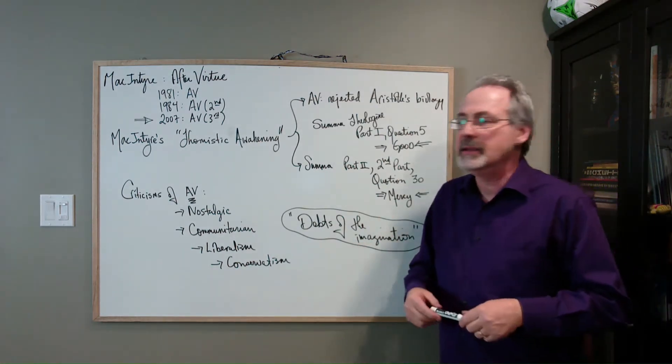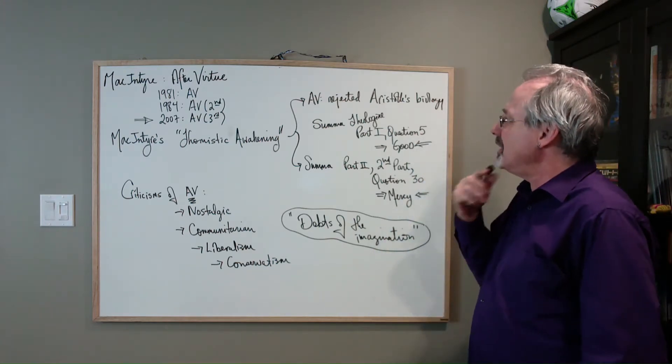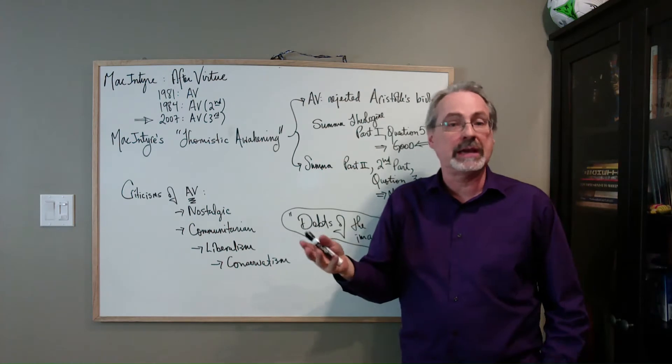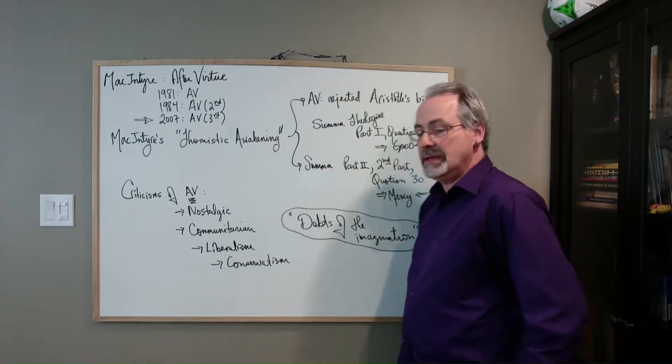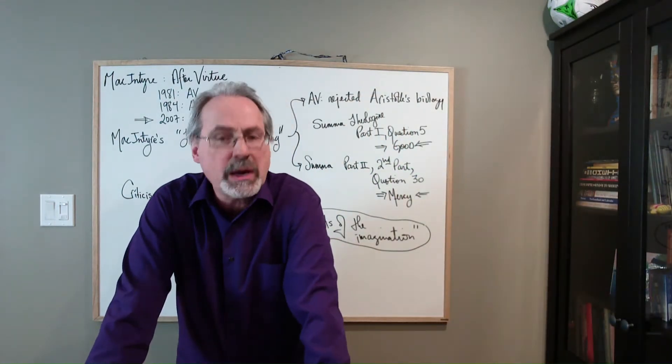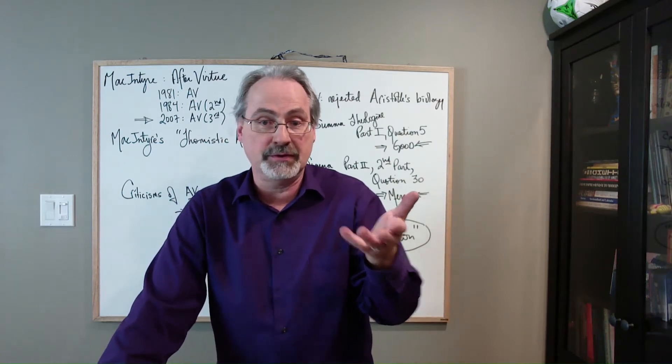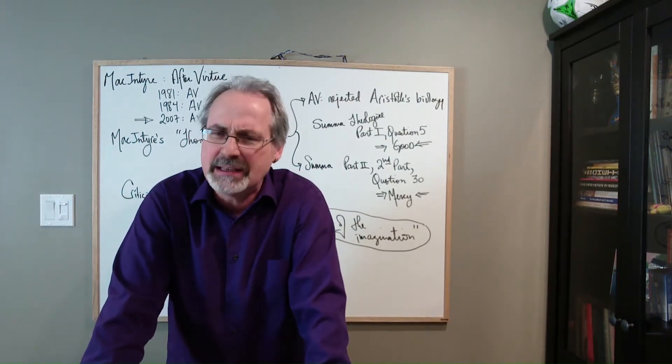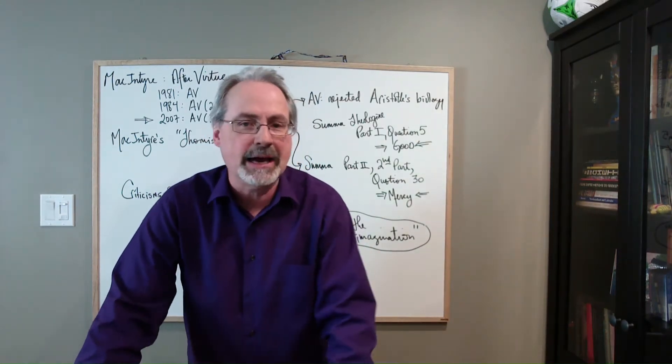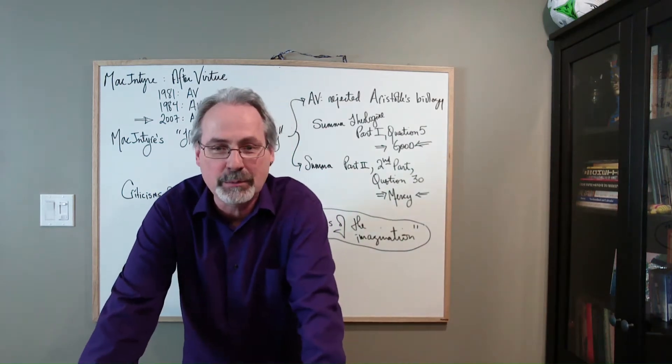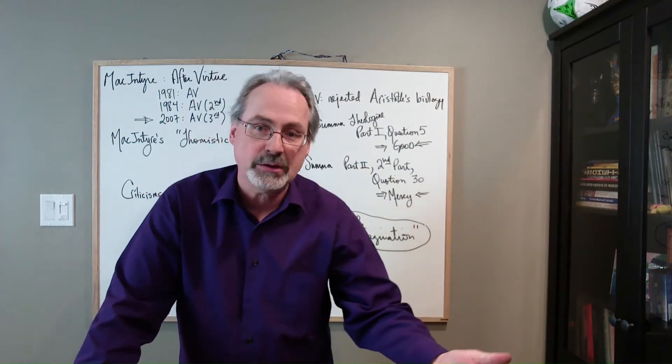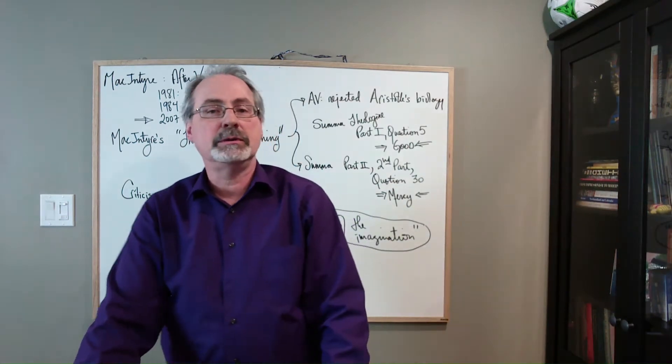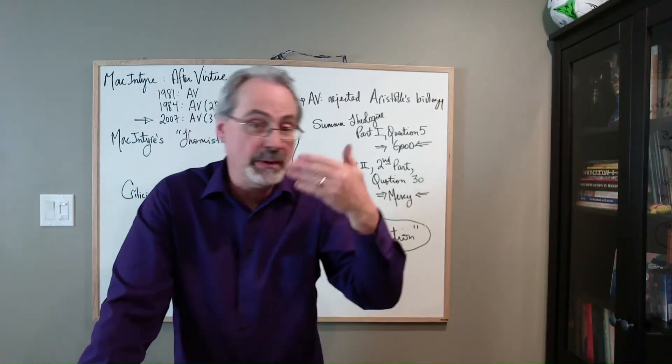What's this Thomistic Awakening? MacIntyre is claiming that when he wrote After Virtue, he had rejected Aristotle's biology, which has a metaphysical dimension to it. He struggled with trying to provide an account of human good in terms of secular and political concepts.